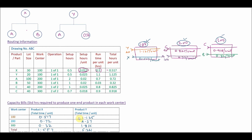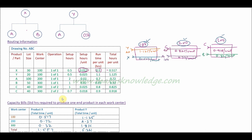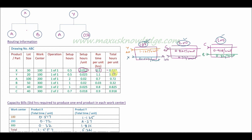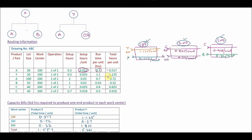Similarly, for product Y, to produce one unit we require 1.125 hours of work center 100, 2.37 hours of work center 200, and 1.836 hours of work center 300, which totals 5.331 hours. Now let us understand how these numbers come from the routing information. Product X requires 0.517 hours per unit on work center 100, and product Y requires 1.125 hours per unit on work center 100 — this is directly given to us from the routing.